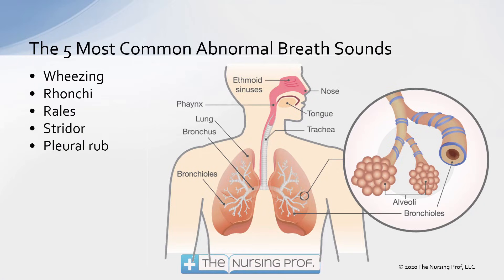Let's talk about the five most common abnormal breath sounds: wheezing, ronchi, rales, stridor, and pleural friction rub. You may have heard these using different terminology, and we're going to talk about that as we move through, because there is some conflicting terminology which makes it even more confusing when trying to understand what's going on with our patient when they have an abnormal breath sound.